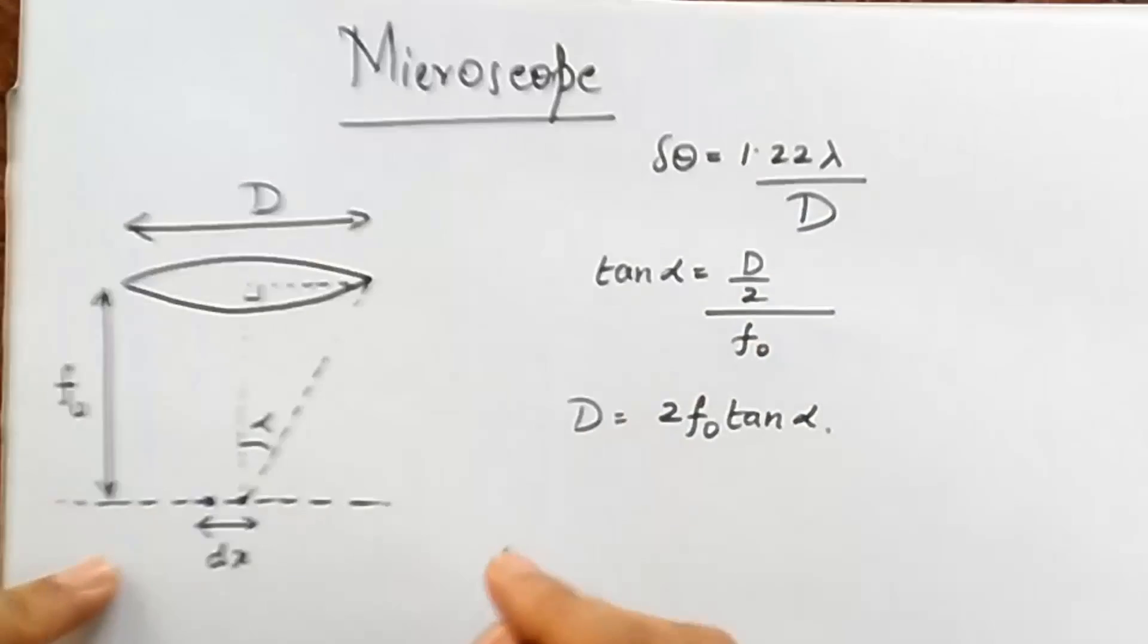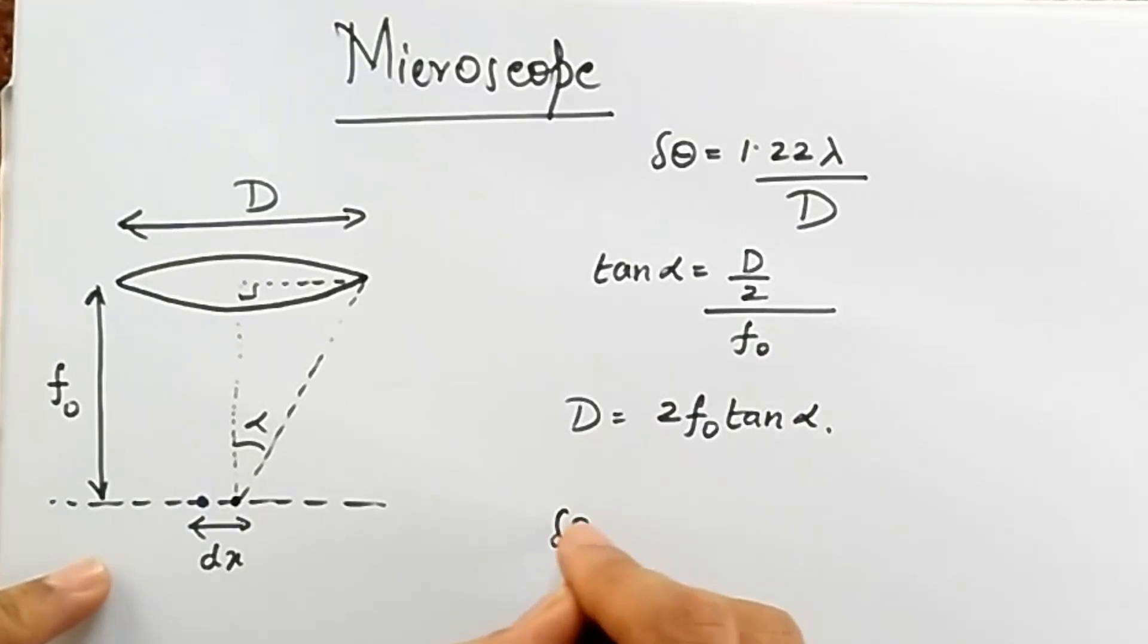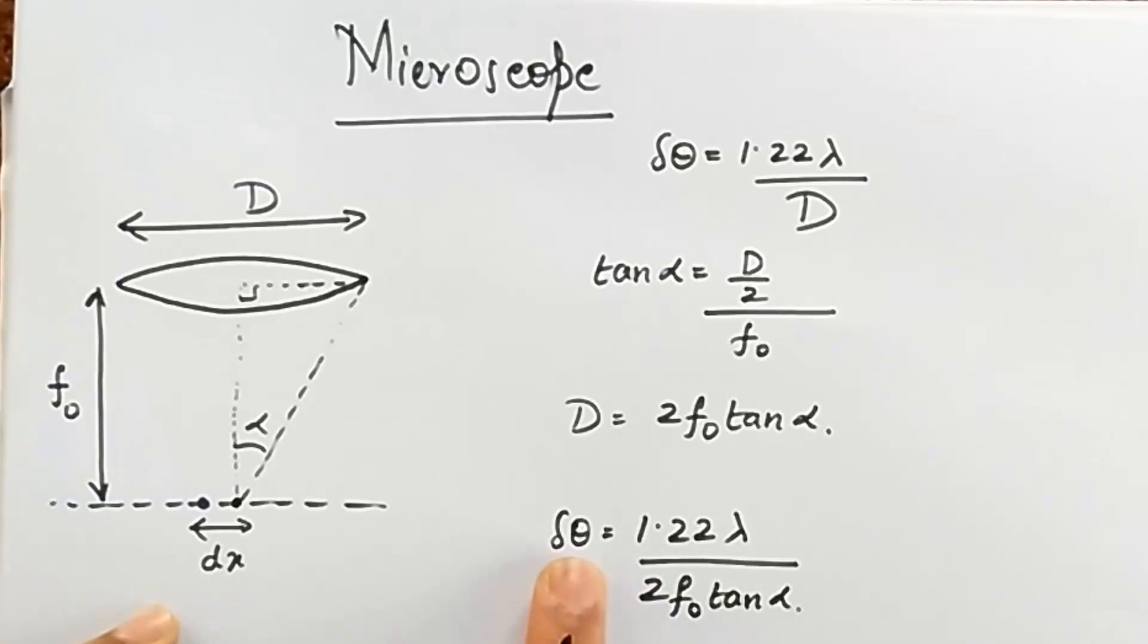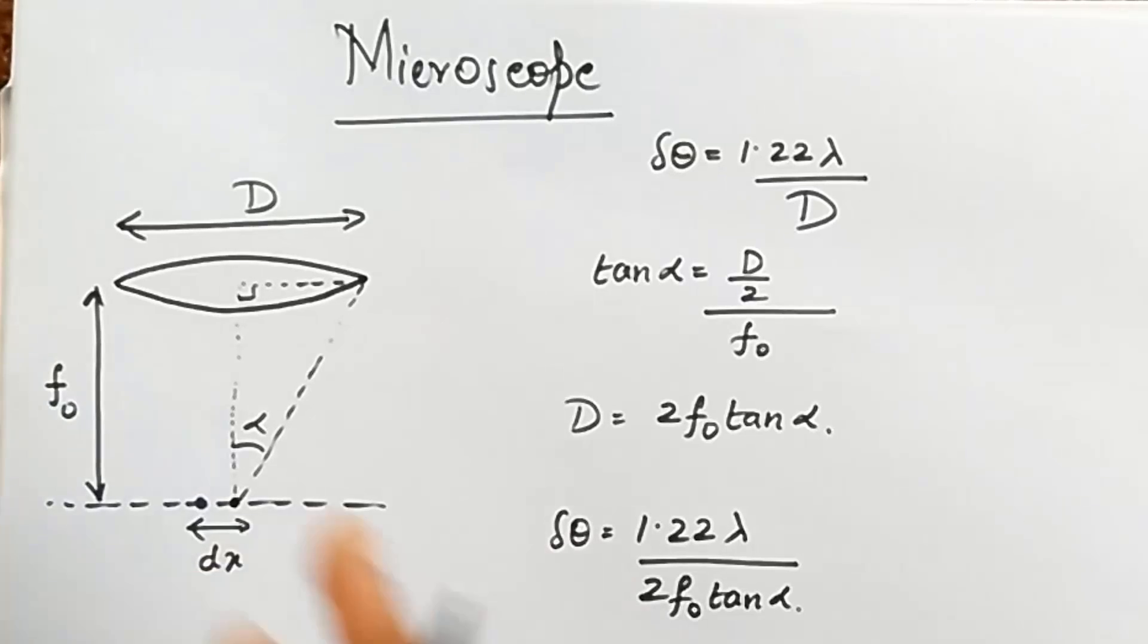And so now all I have to do is substitute this number, and I get delta theta is going to be 1.22 lambda divided by 2 f0 tan alpha. But remember, I am not interested in the angular resolution, but I'm interested in what is the limit of resolution when it comes to distance.